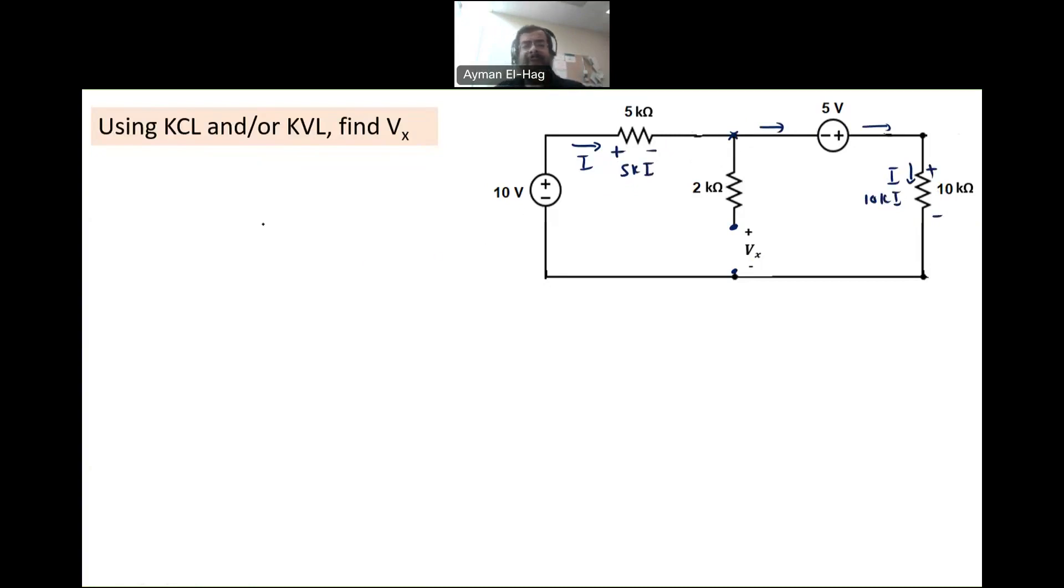We have one unknown. We will apply KVL, so apply KVL to outer loop. So this is the loop that we would be applying KVL to.